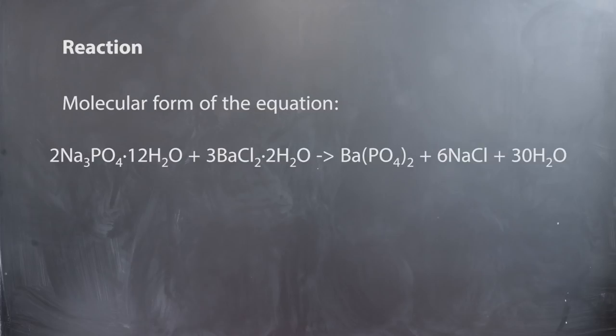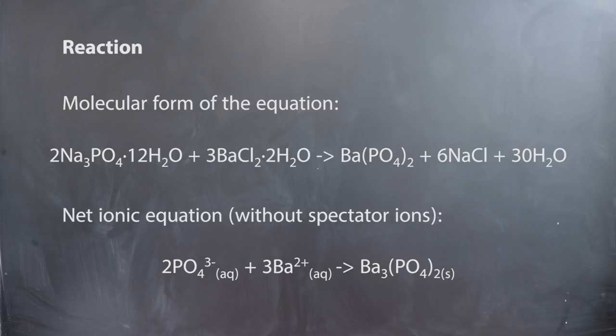This is the molecular form of the equation. When we remove all spectator ions, this is the net ionic equation that forms. Barium phosphate is the precipitate that we will be observing. Make sure all the equations are balanced before doing any stoichiometric calculations.